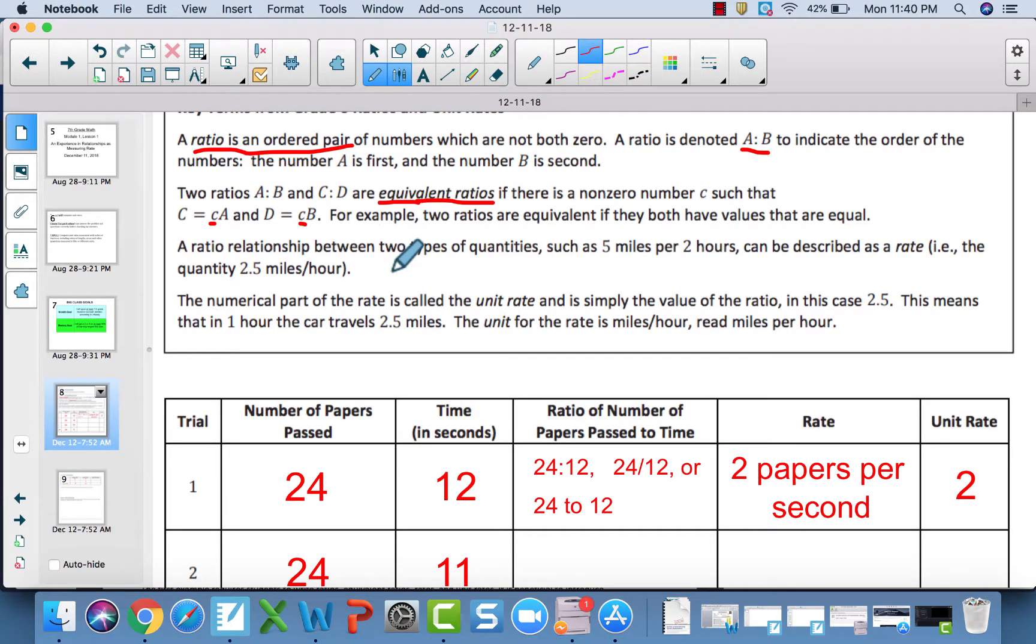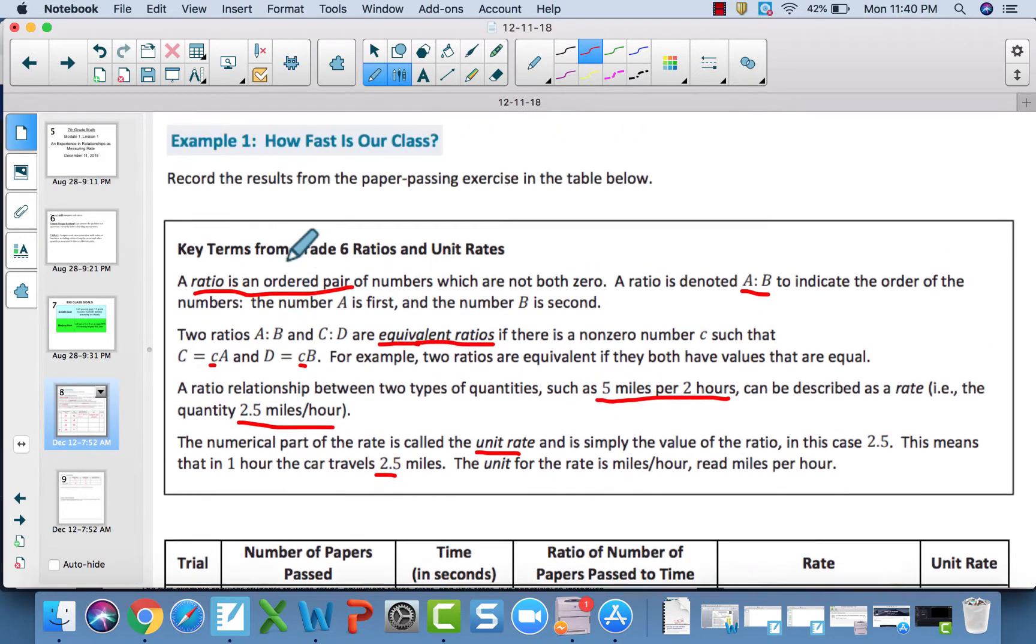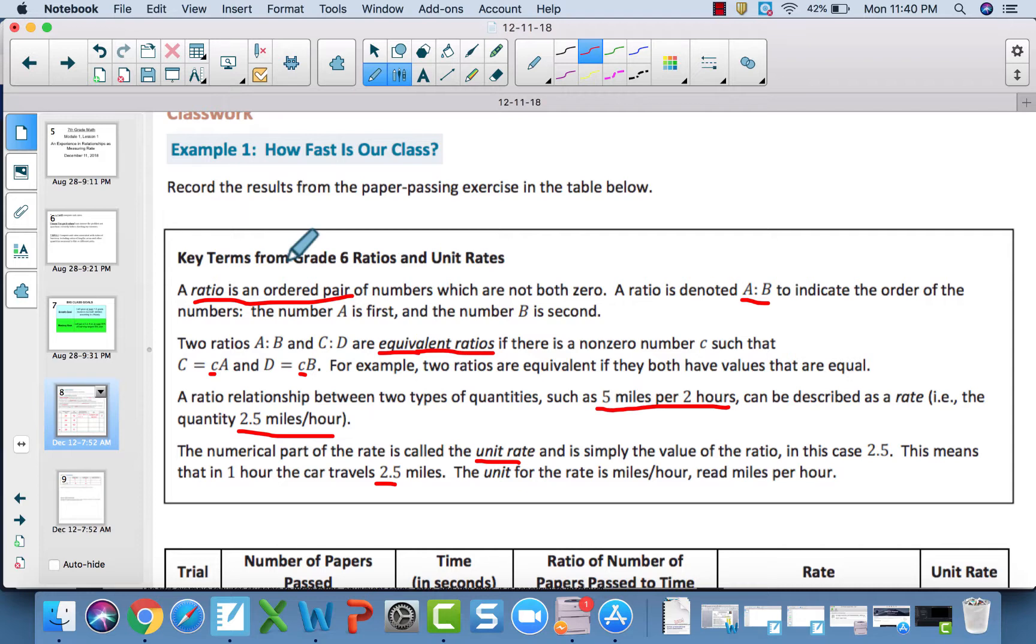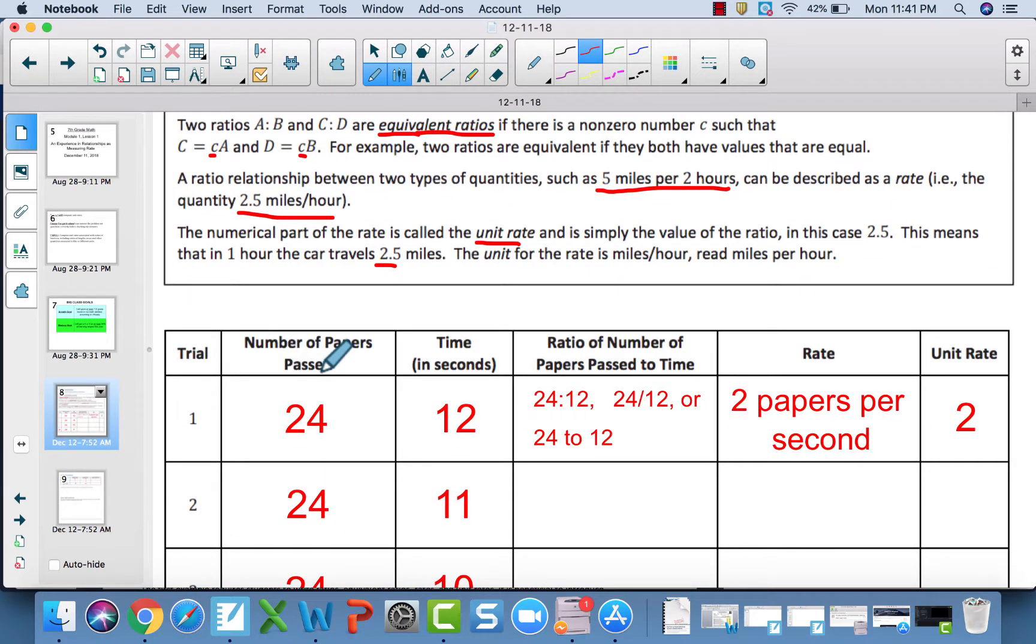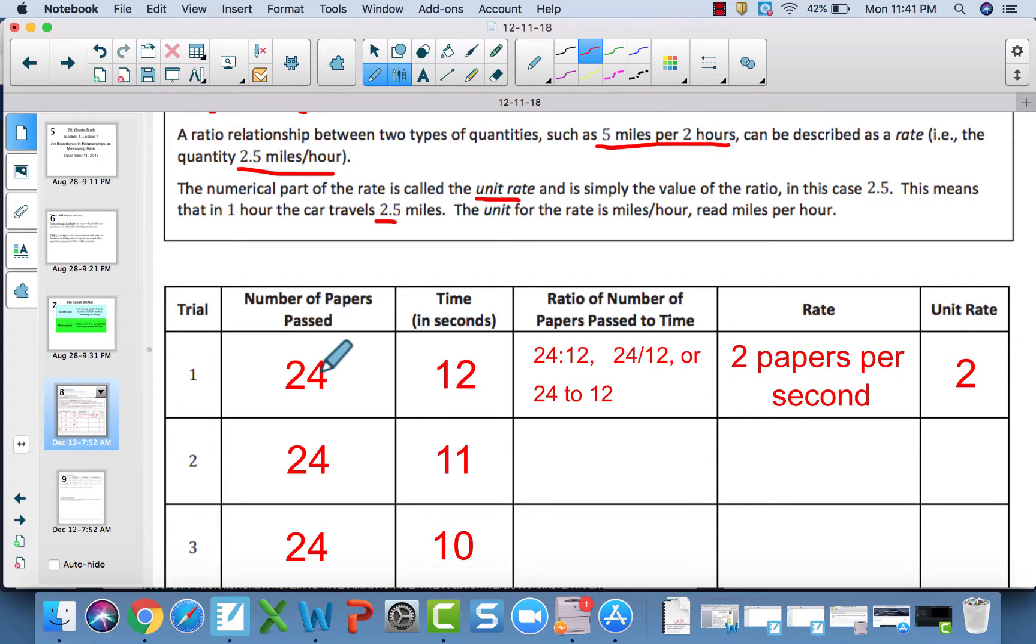A ratio relationship between two types of quantities, like 5 miles per 2 hours, can be written as a rate. If you're going five miles for every two hours you can divide and get two and a half miles for every one hour. That is called a rate. The numerical part of the rate, the number, is the unit rate. So in this case the unit rate is two and a half. The entire relationship written out with the label is called the rate. Before I move forward, I apologize if you hear toys going off - I got my dog a few new toys.